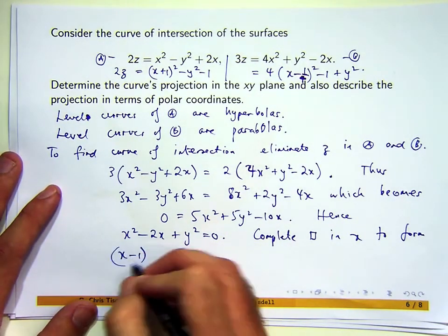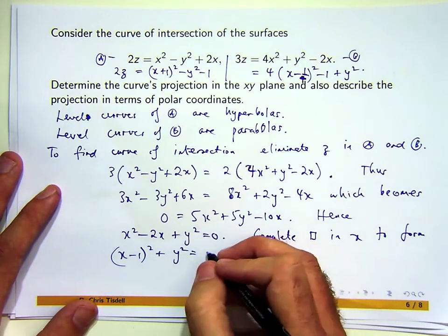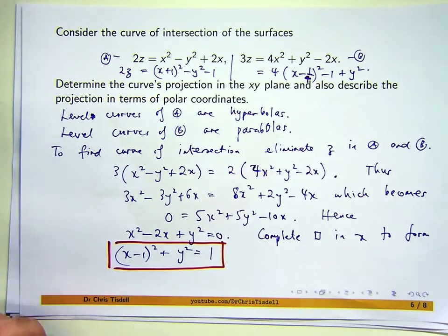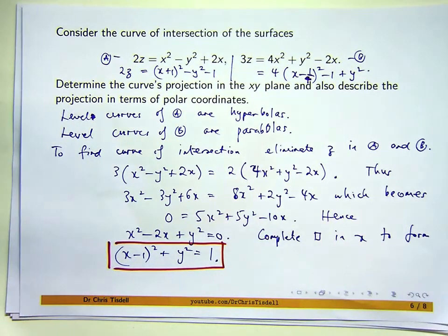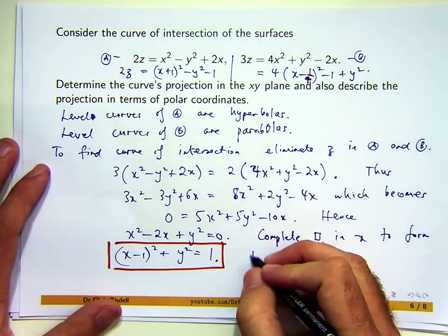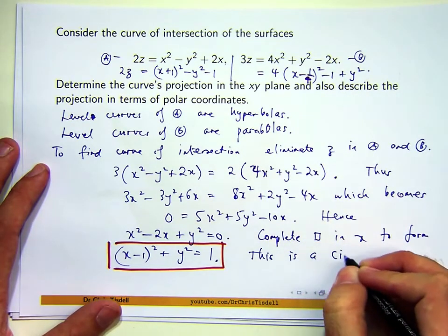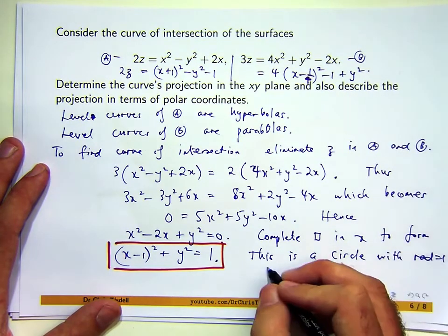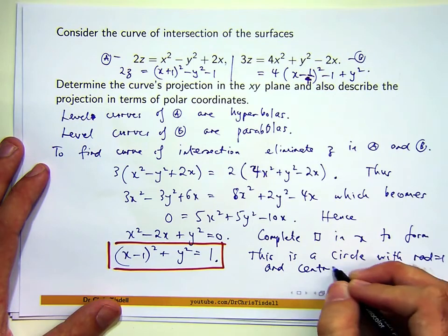I take half the coefficient of x, square it, add it to both sides and take it away. Now we're in business. This boxed expression should look familiar to you. What is it? It's a circle with radius 1 and center (1, 0).